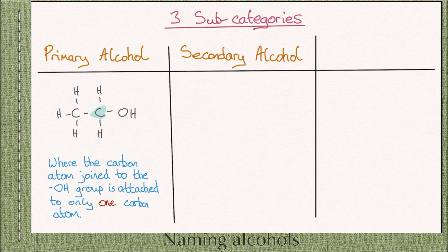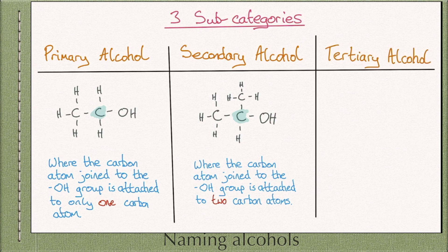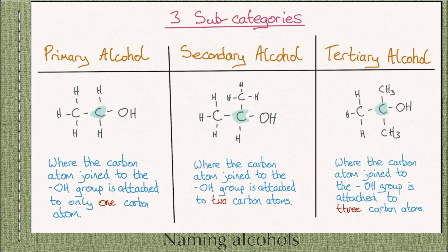Secondary alcohols are where the carbon atom attached to the OH group is attached to two other carbon atoms. For instance, in propan-2-ol, the carbon attached to the OH group has three other bonds, and two of those bonds are to carbon atoms, so therefore it is a secondary alcohol. Tertiary alcohols are where the carbon atom attached to the OH group is attached to three other carbon atoms. For instance, 2-methylpropan-2-ol — the carbon atom attached to the OH group has three bonds that are all to carbon atoms, so therefore it is a tertiary alcohol.